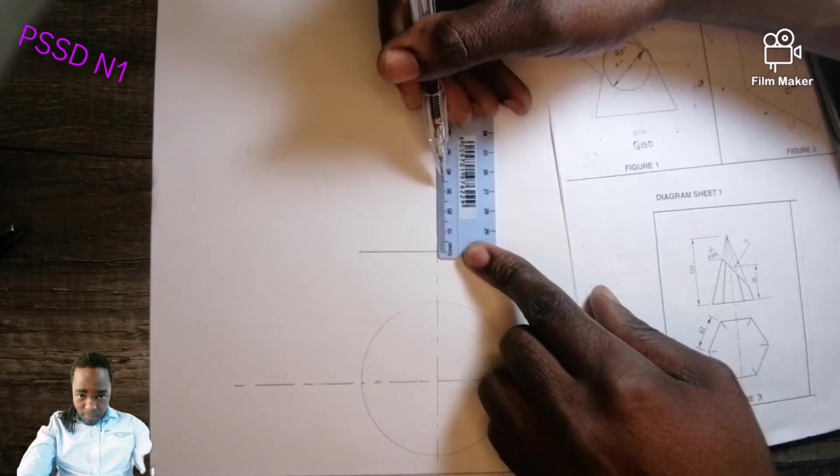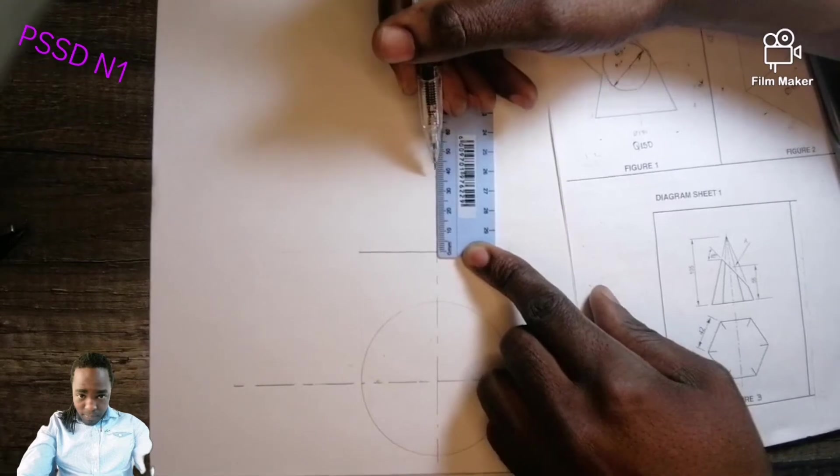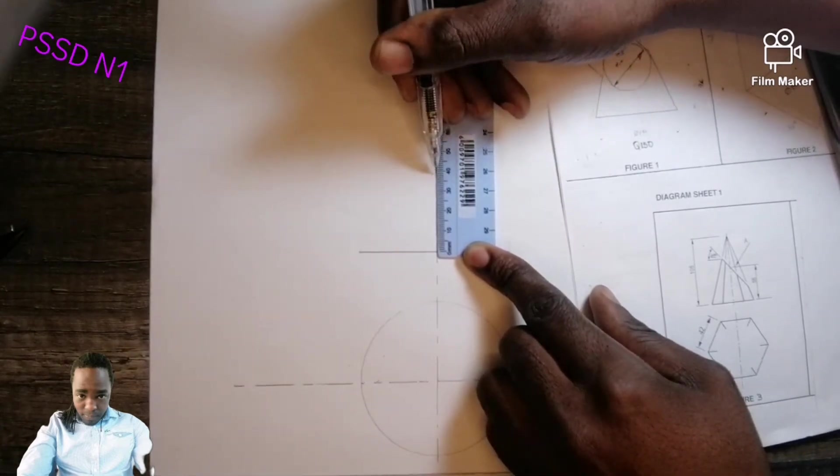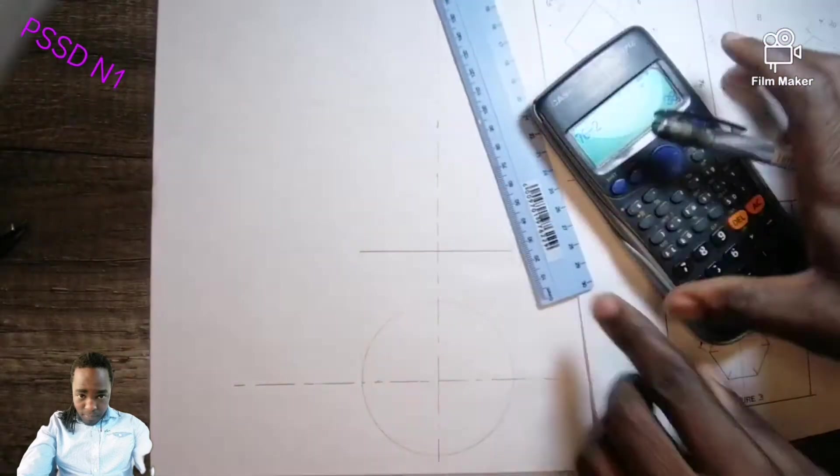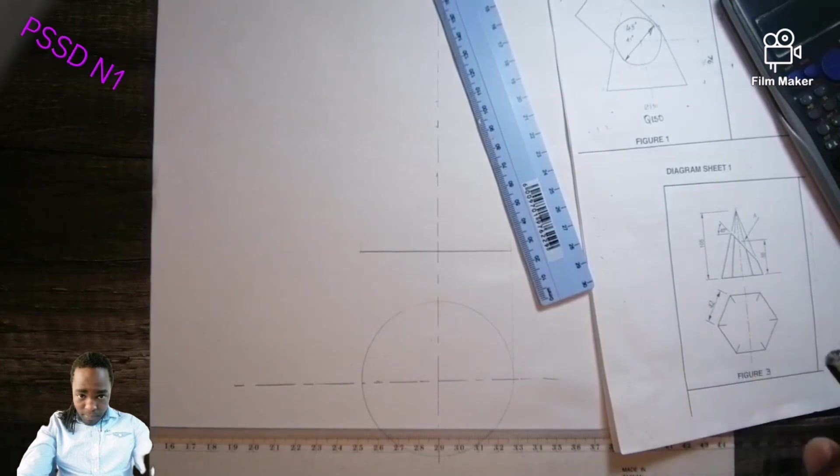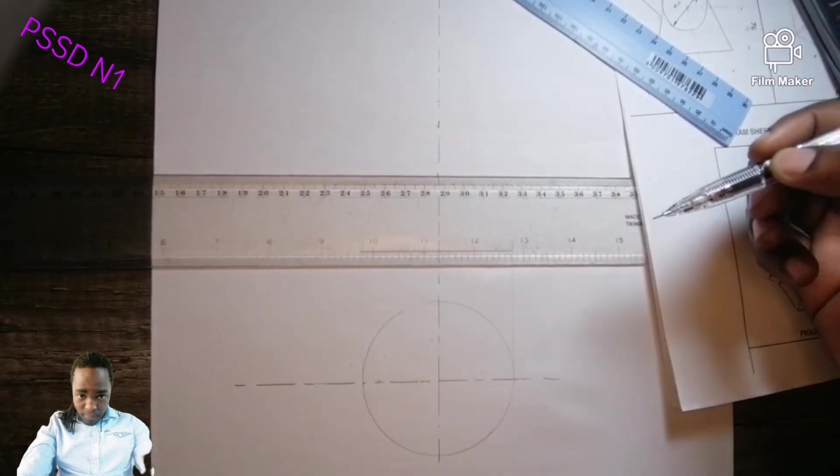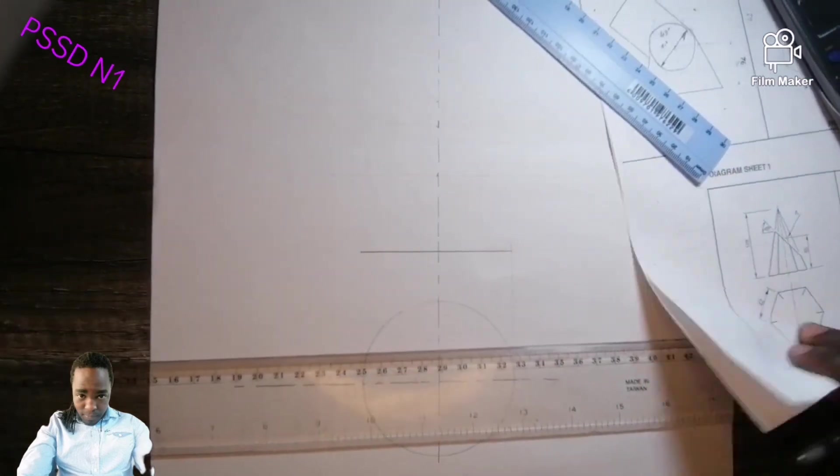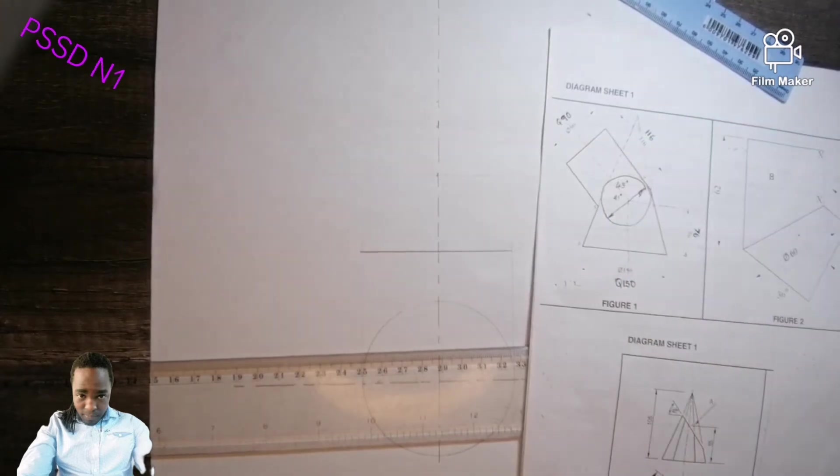Then come to draw a circle of diameter 90, which is this one. Diameter 90. Double check, we are not given a dimension from here to your apex point. We are not given that dimension.